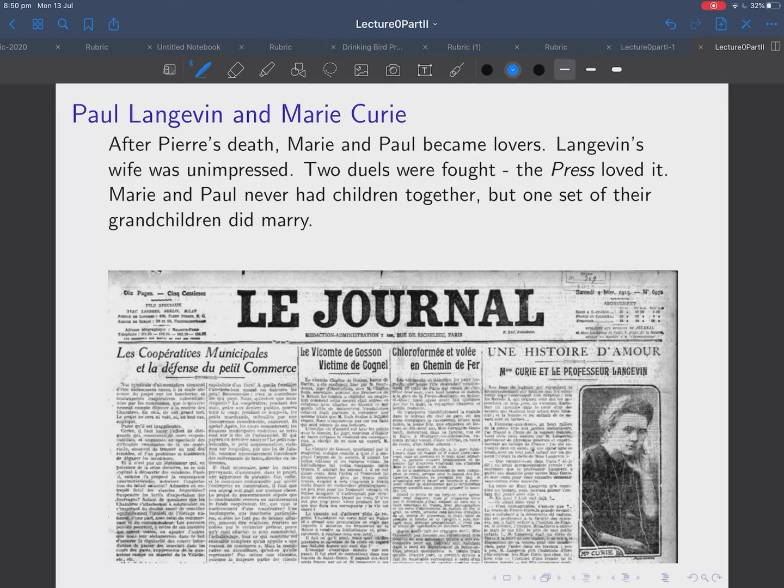So, the other interesting thing about Paul Langevin is that after Pierre Curie's tragic death, Marie Curie and Paul became lovers, and Langevin, who was still married at the time, his wife was unimpressed. And there were duels fought over it, and Marie and Paul never had any children together, they didn't get married, but one set of their grandchildren got married.